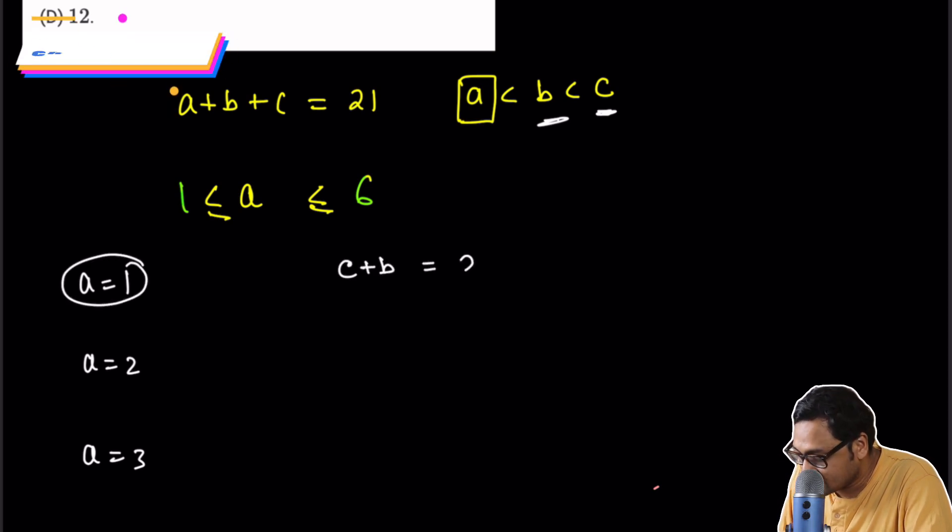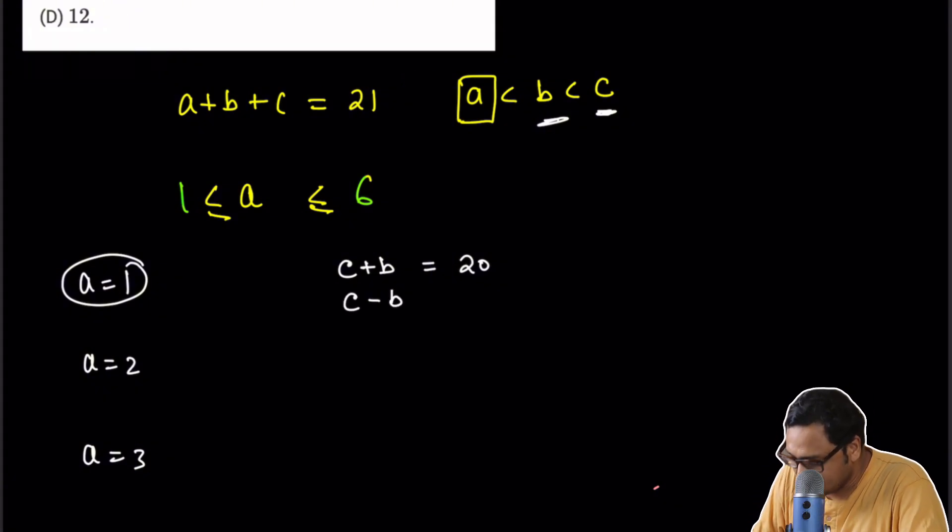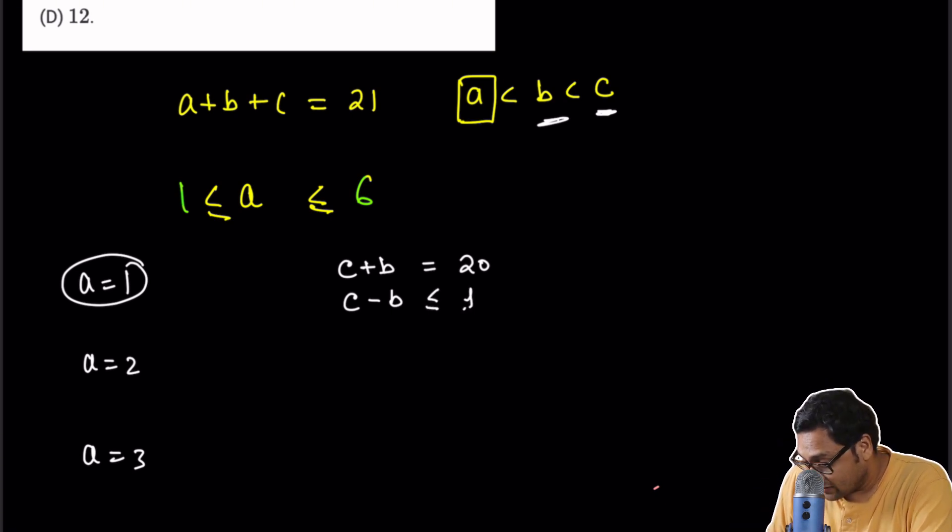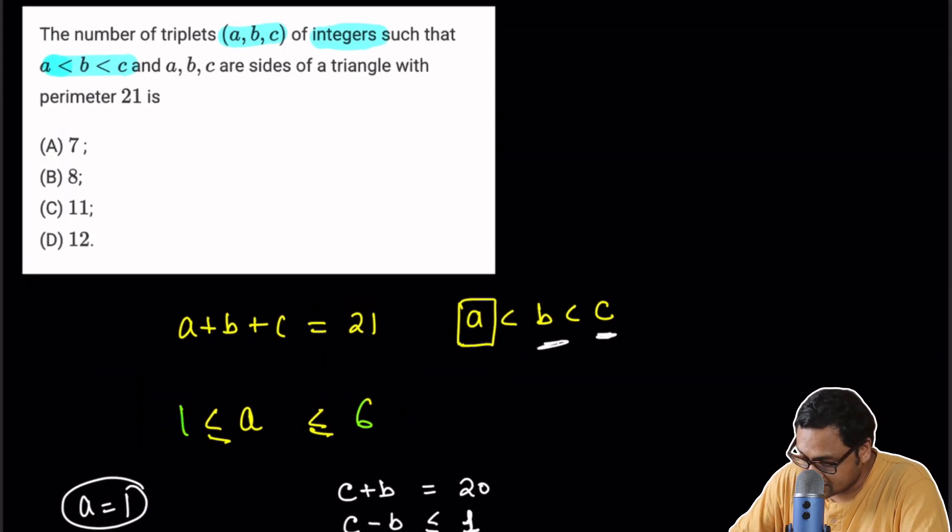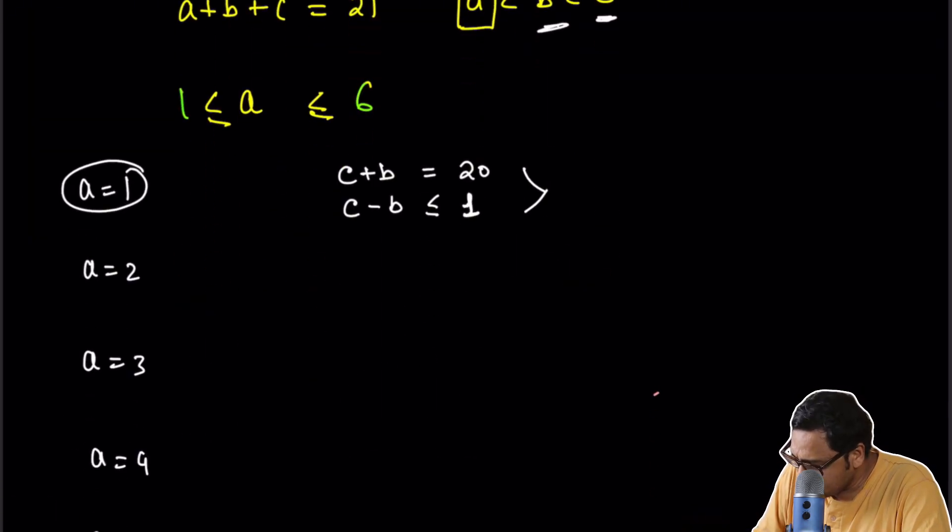the remaining value of the perimeter. Can you tell me what is C minus B? Well, C minus B has to be less than or equal to 1, the third side. We are using the triangular inequality in the other way. Okay, so it cannot be 0. C and B are not equal. They are all very different. These are all unequal. We know that. So from here, we can say that C plus B is 20 and C minus B is equal to 1.